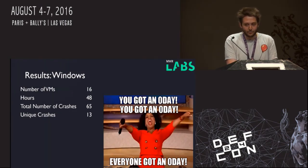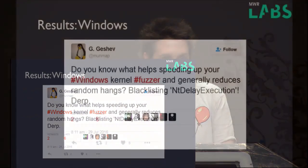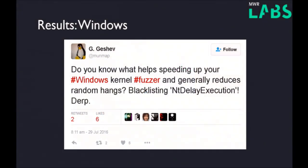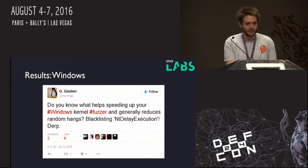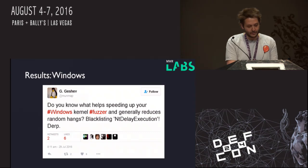As it turns out though, we weren't being particularly effective with our fuzzing. For those that don't know, there are a number of syscalls in Win7 that are simply just sleeps for all intents and purposes — NT delay execution being one. We managed to find that and blacklist it, and surprise, surprise, the fuzzer was a lot more effective. We ran it again last week and ended up with around 150 crashes, 40 of those unique. We actually crashed our database because it ran out of space.